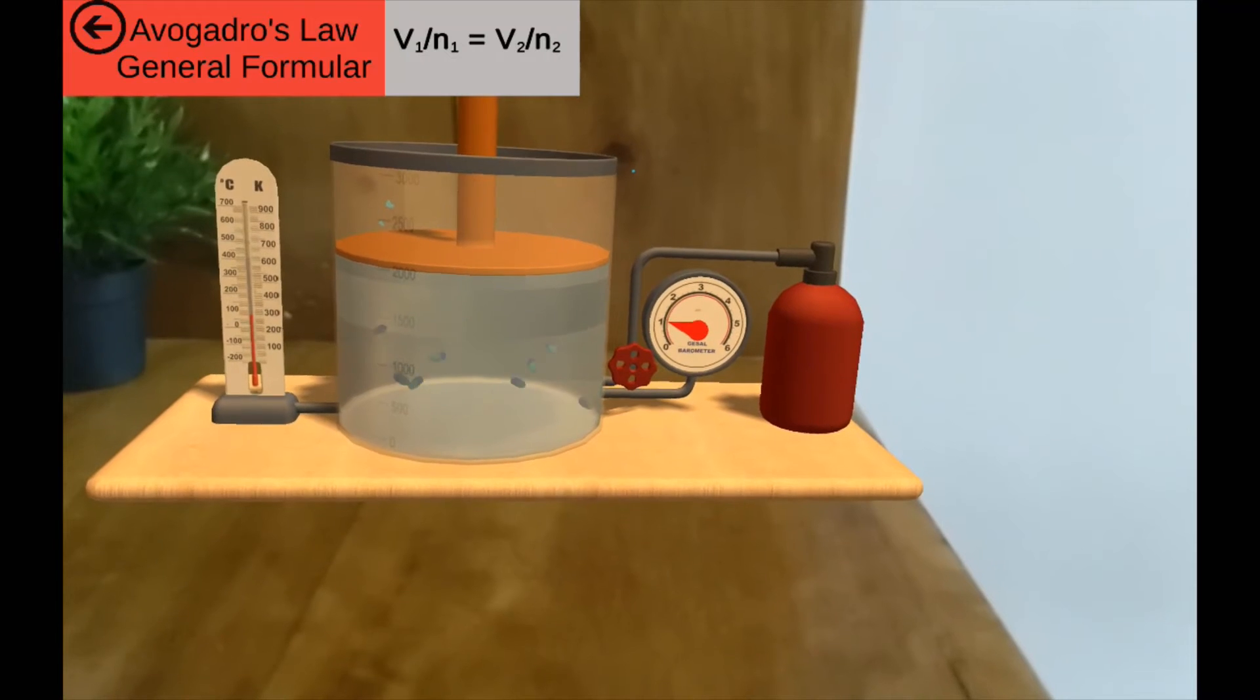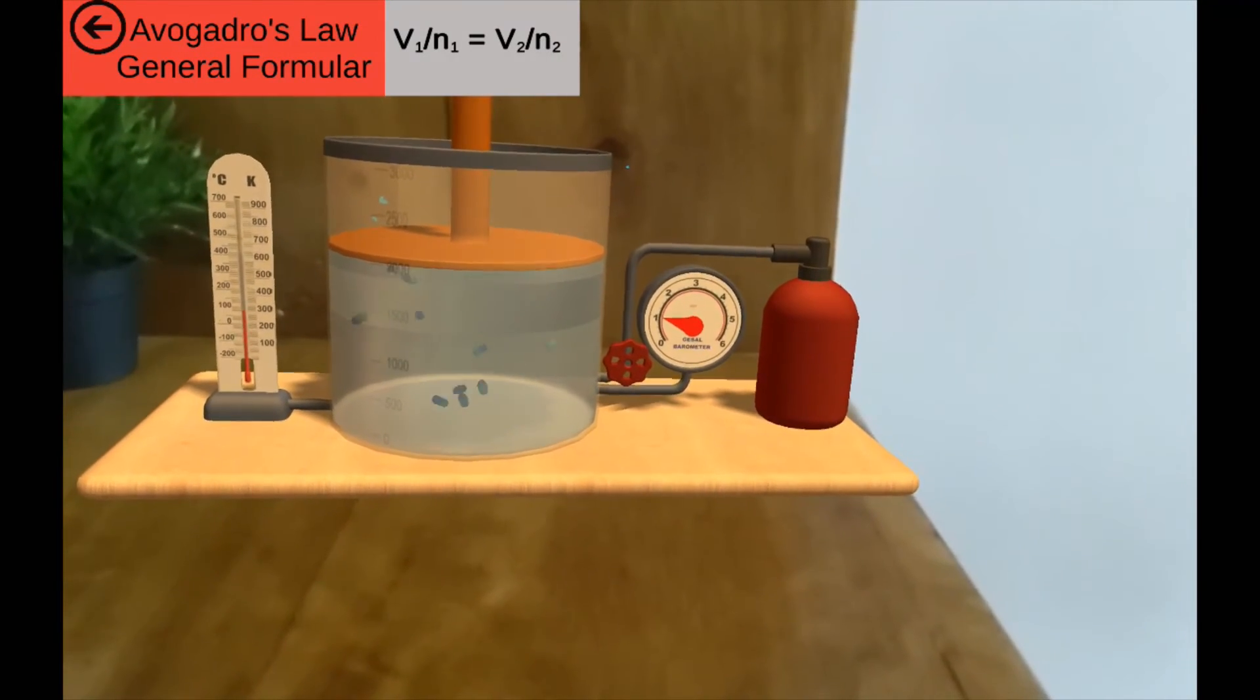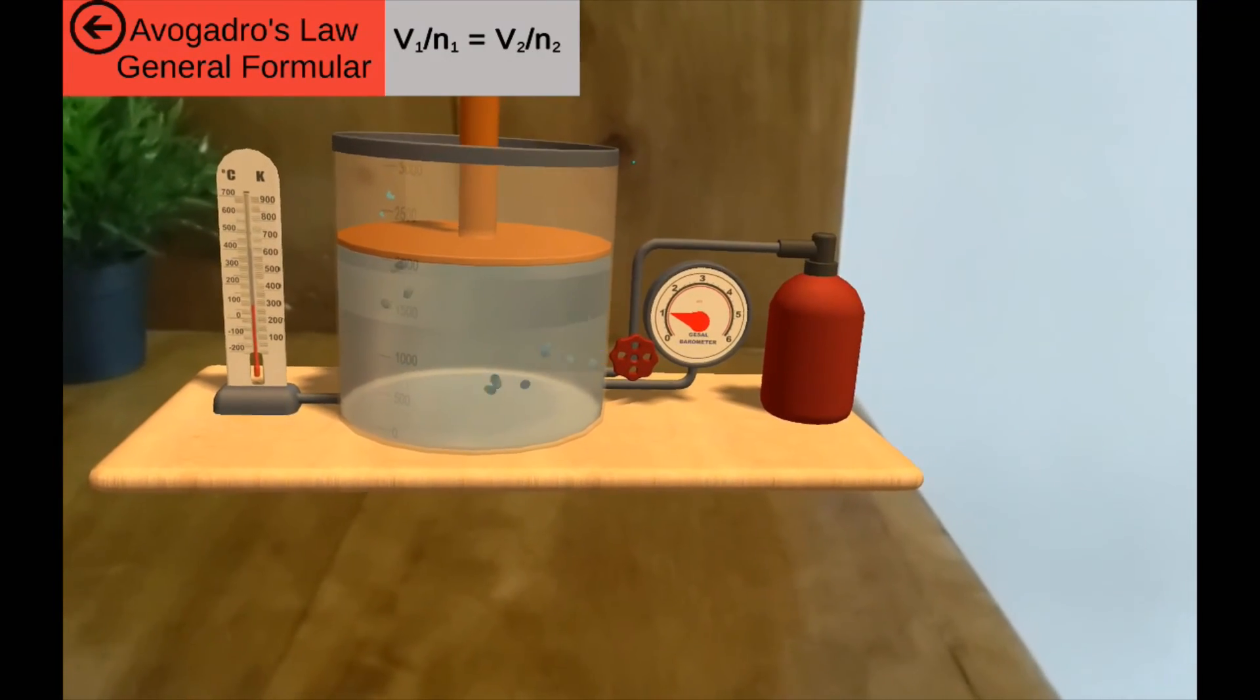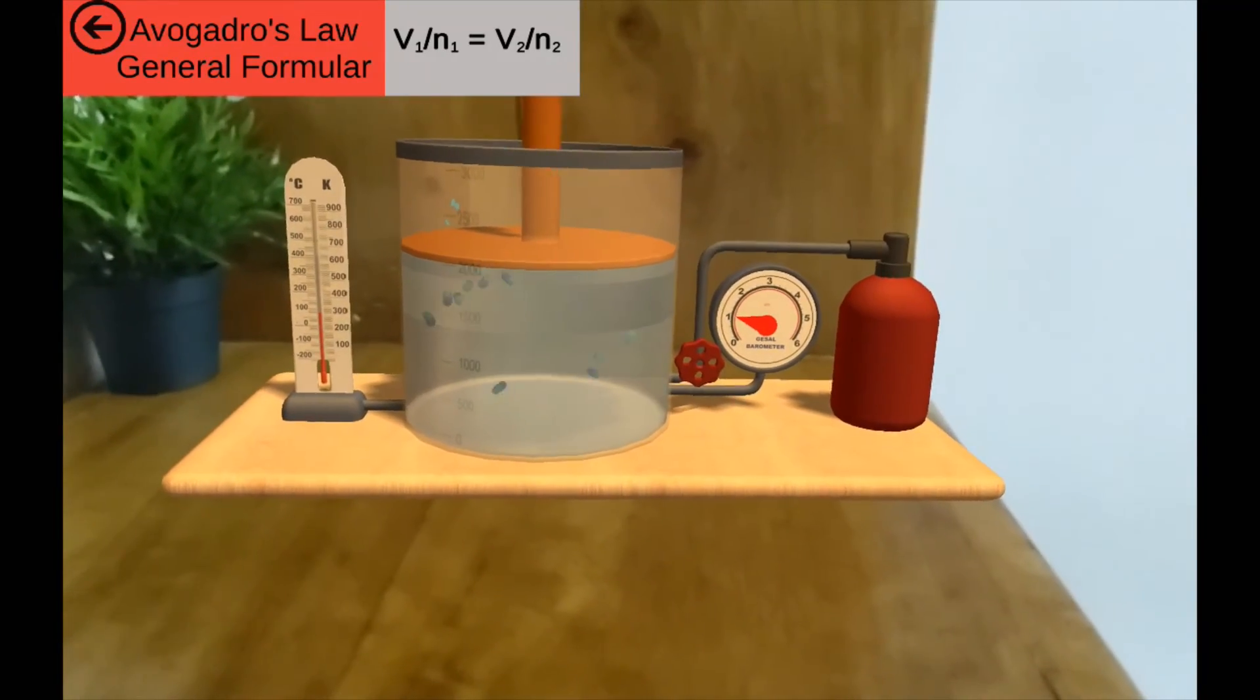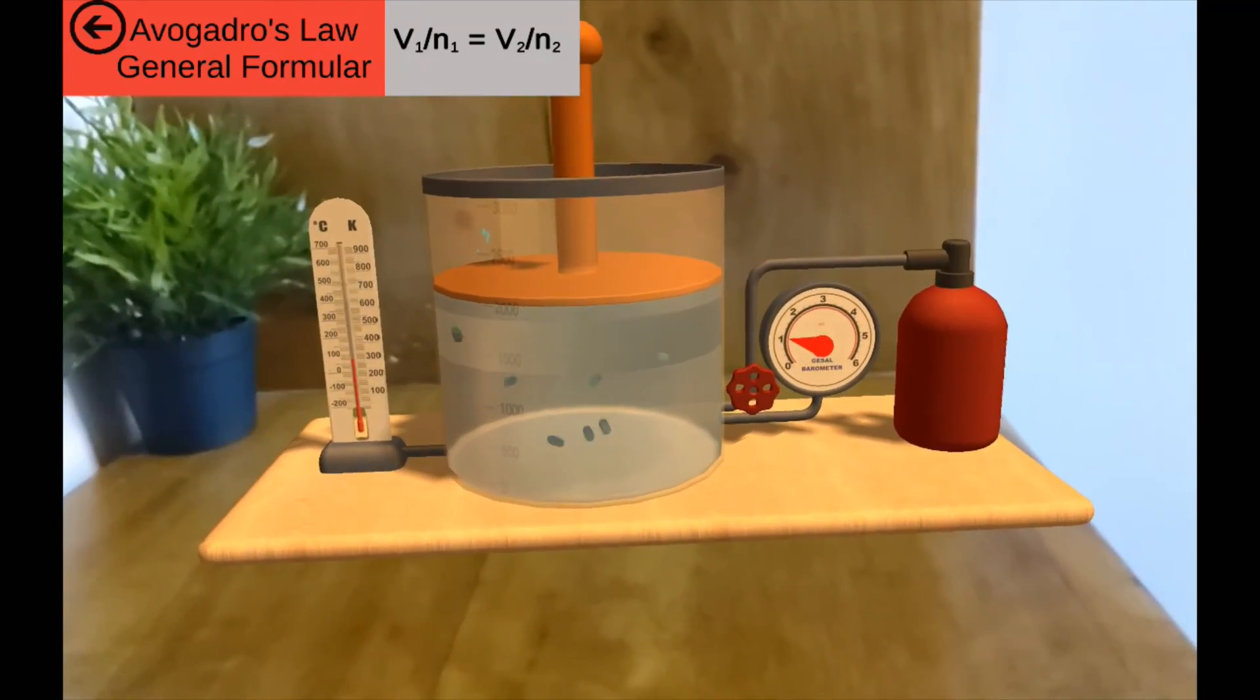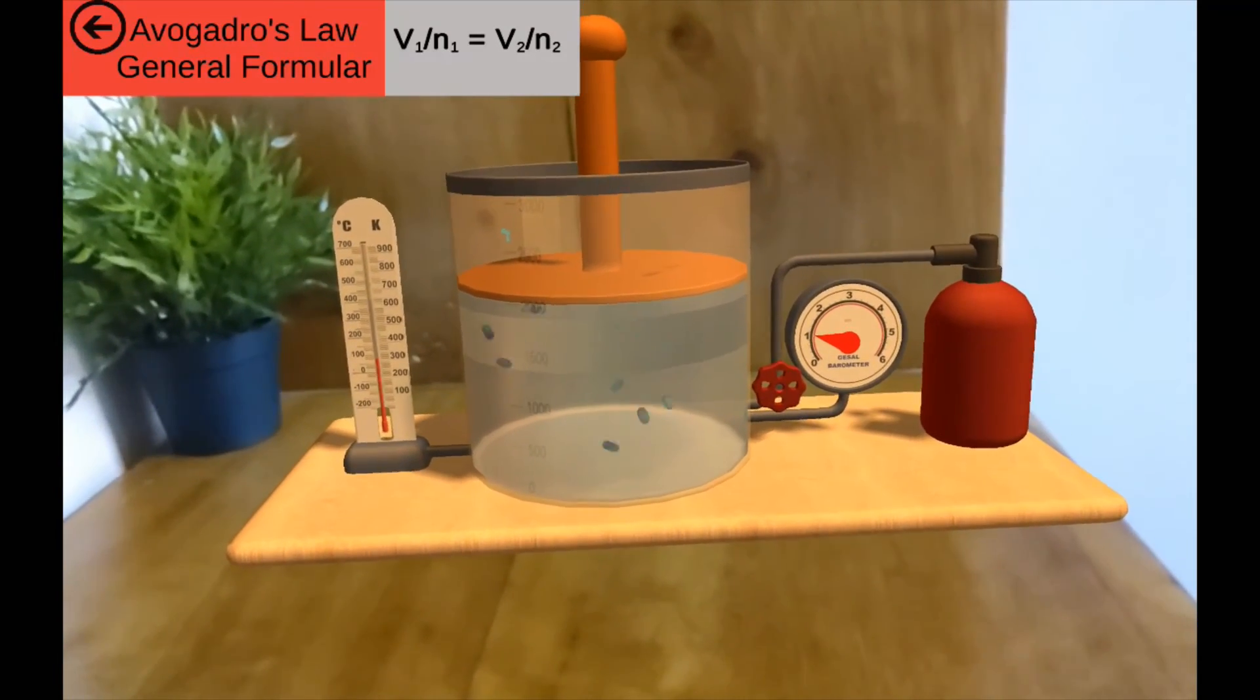Play around with different values in the formula to know what happens at any given instance. Remember the pressure and temperature remain constant. You will therefore notice that at any given time that the values on the thermometer and barometer never changed.